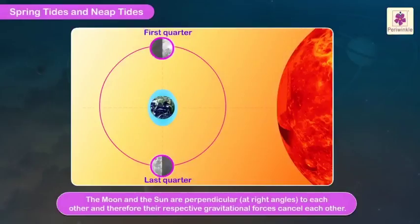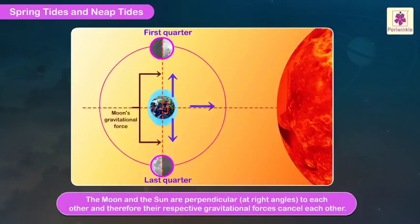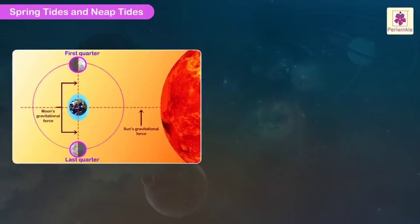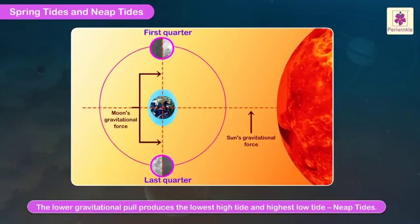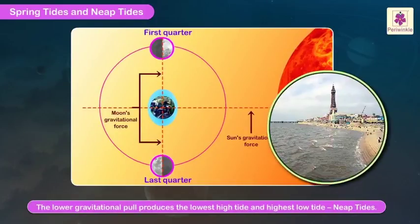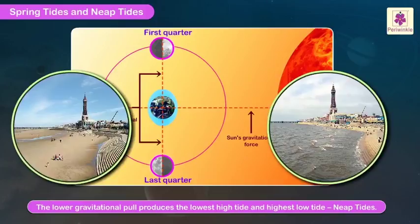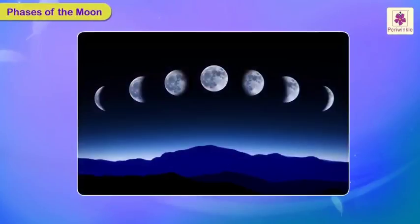During the first and the last quarter phases, the Moon and the Sun are perpendicular, that is at right angles to each other, and therefore their respective gravitational forces cancel each other. This results in a lower tidal range than the average. The lower gravitational pull produces the lowest high tide and highest low tide. These are called neap tides.